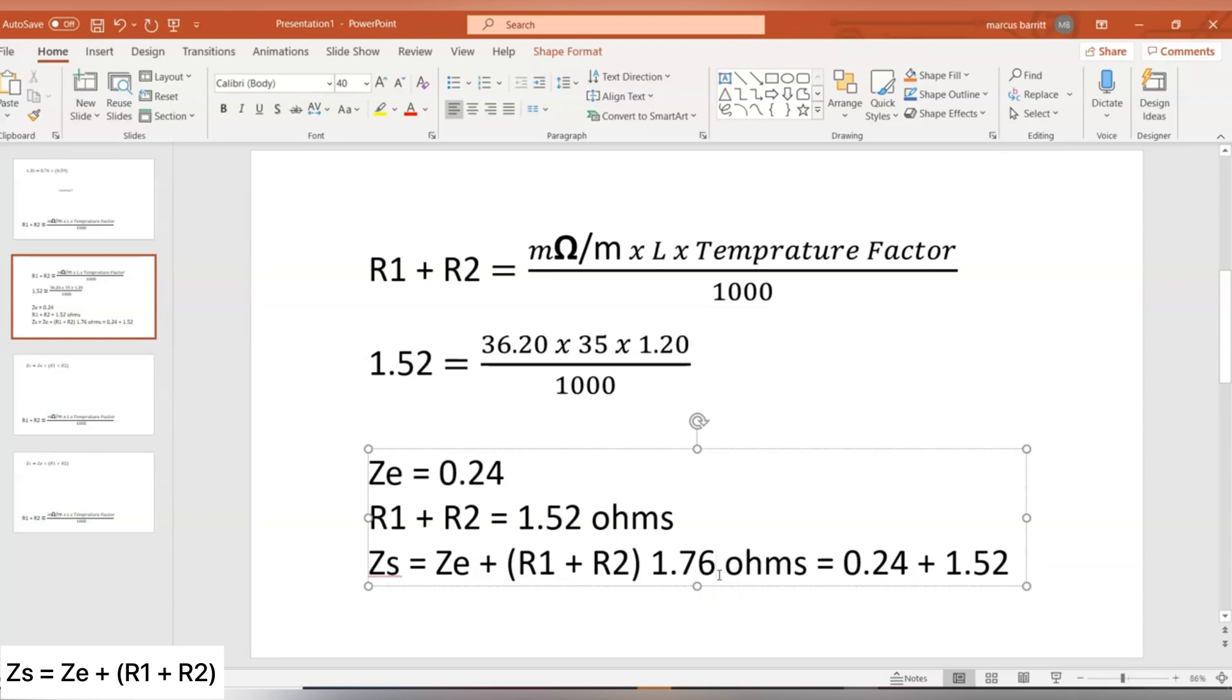Remember, ZS equals ZE plus R1 plus R2, we may be given the ZE, it might be that we have to inquire about the ZE to the local DNA. Now they will give you, like we said earlier, maximum permissible, so let's say you've got a TNCS, you say, you've got TNCS, what is my ZE, or my external fault loop impedance, that was 0.35 ohms. We then have to calculate our R1 and R2, because remember, we're at the design stages, we haven't physically installed it, we haven't physically measured it using our low reading ohmmeter, we're only designing it.